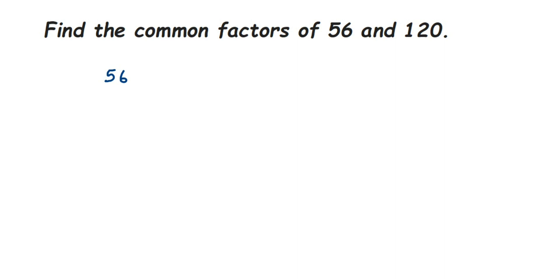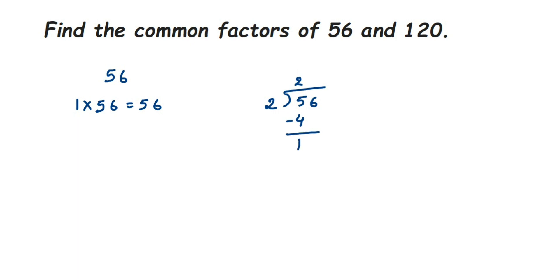Every number goes in the 1 times table, so 1 × 56 = 56. Since 56 is an even number, it goes in the 2 times table. If you don't know the multiple, just divide: 56 ÷ 2. Working it out: 2 × 28 = 56. Next, check 3 — it doesn't go into 3 times table, so we skip it.